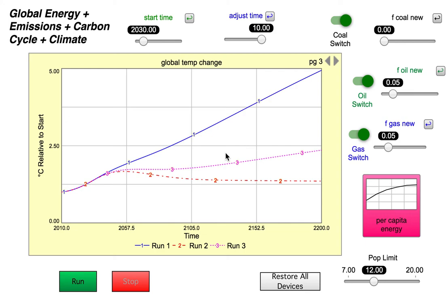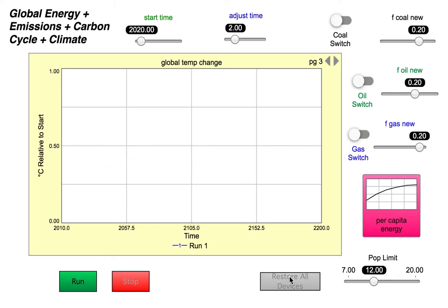We're going to see what needs to be done in terms of reducing the coal fraction to keep the temperature below a two degree limit by the year 2200. So initially I'm just going to restore everything to the starting conditions here and we'll run it once and see what happens. We've got the very high temperature change there.